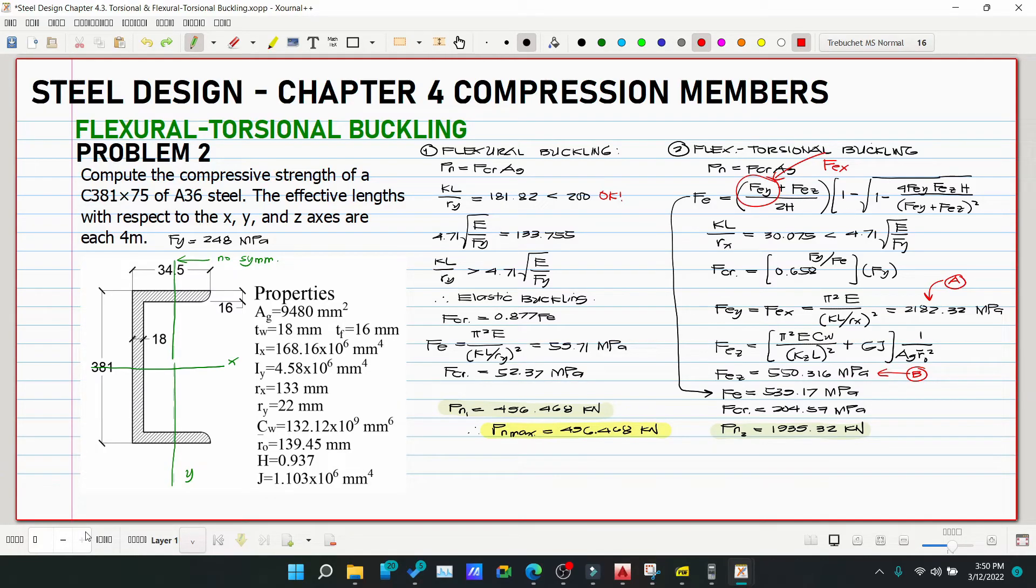We've finished Chapter 4 Compression Members. We won't discuss built-up members; we'll move on to Chapter 5, flexural members, which is beams. We're not sure when we can start making the template and recording for flexural members because it's getting hectic—midterm exams are approaching for my students, so it'll be busy with work and other sidelines. Please wait for Chapter 5 Flexural Members. This is our Problem 2 for flexural-torsional buckling. Thank you for watching, bye.